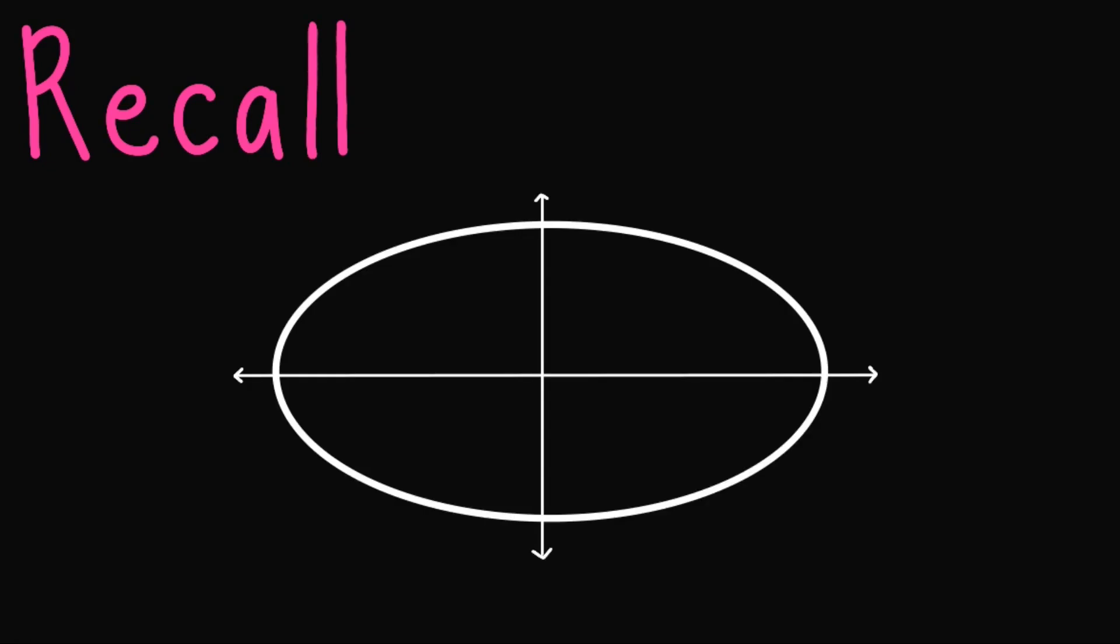Hi there. So far, we have learned the graph of an ellipse. Aside from this, we also learned some of its parts like the foci and the center. We also know the length of the semi-major axis to be A, while for the semi-minor axis it is B.